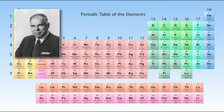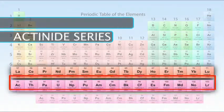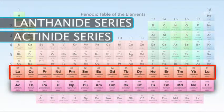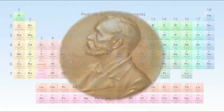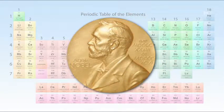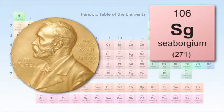Seaborg reconfigured the periodic table by placing the actinide series below the lanthanide series. In 1951, Seaborg was awarded the Nobel Prize in Chemistry. Element 106 has been named Seaborgium (Sg) in his honor.